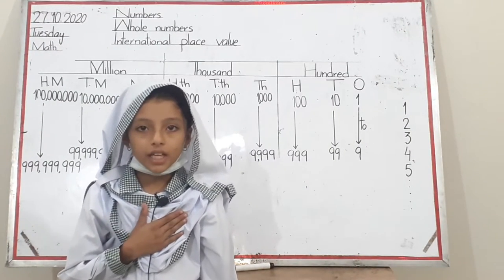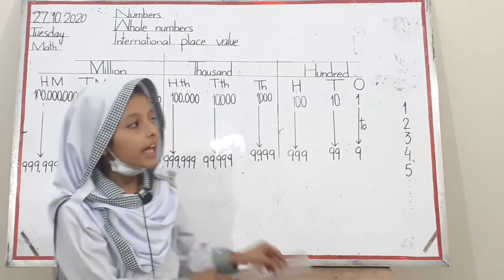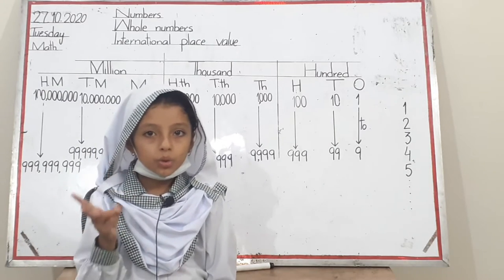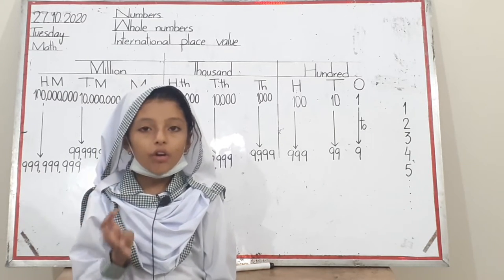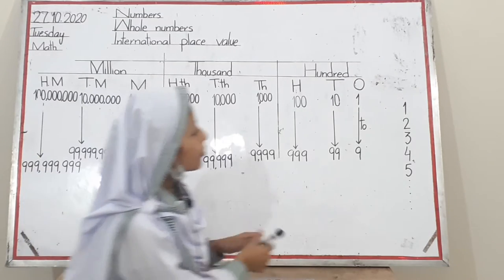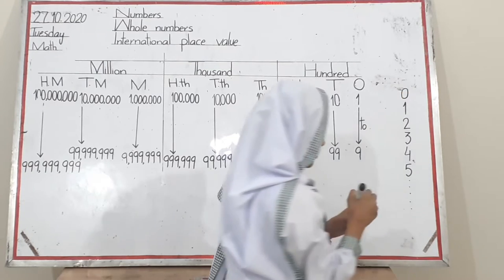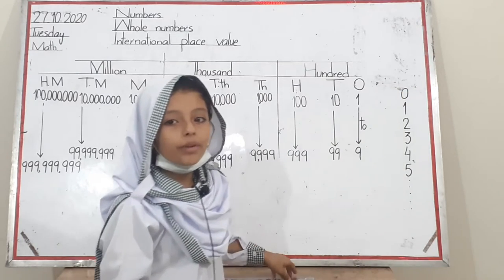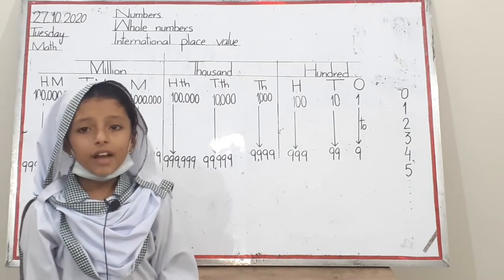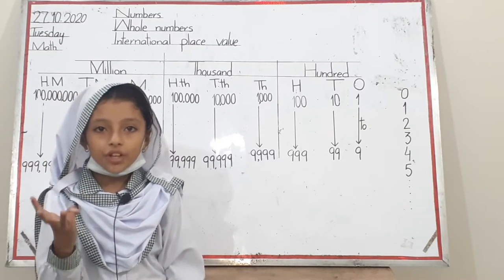Assalamualaikum, my name is Javeria Mazhar. I did in class for Echo. Today I will tell you about numbers. Numbers start with one, two, three, four, five, and going on. When we write zero before one, these are called whole numbers. International place value has three families.